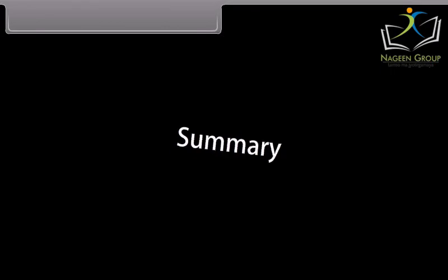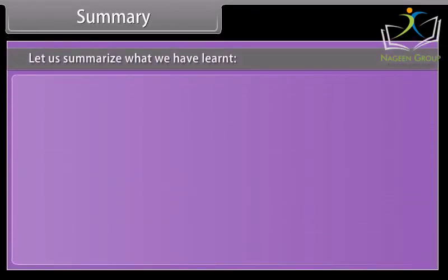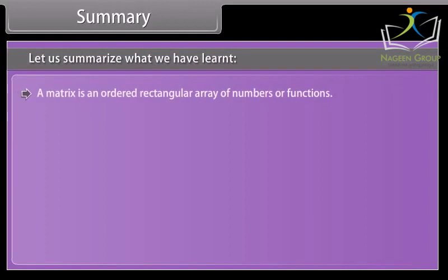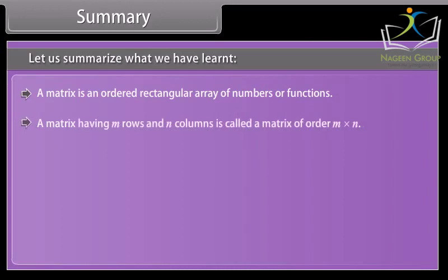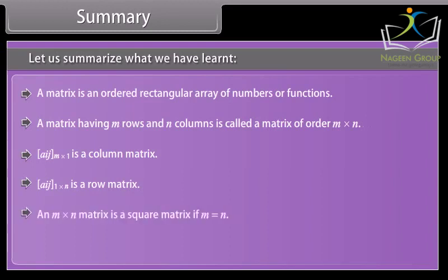Summary. Let us summarize what we have learnt. A matrix is an ordered rectangular array of numbers or functions. A matrix having M rows and N columns is called a matrix of order M by N. Aij M by 1 is a column matrix. Aij 1 by N is a row matrix. An M by N matrix is a square matrix if M is equal to N. A is equal to Aij M by M is a diagonal matrix if Aij is equal to 0 when I is not equal to J.